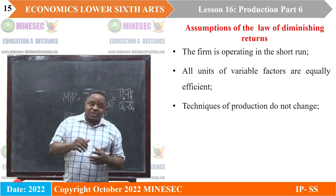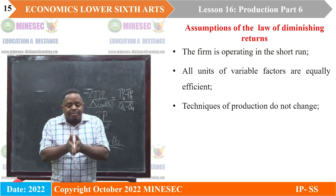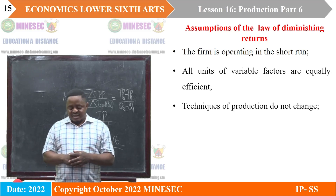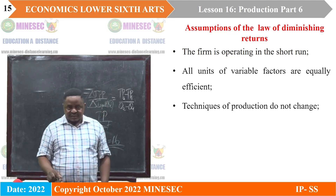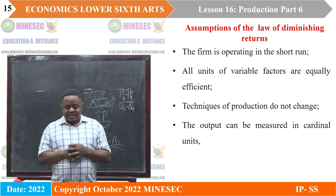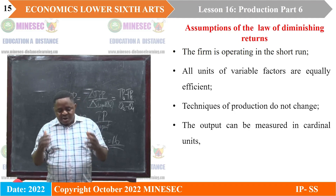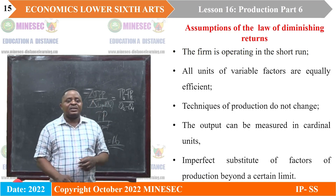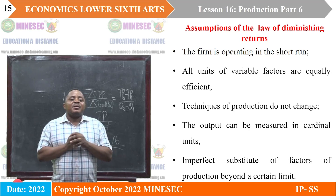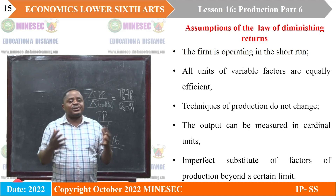We assume that the technique of production does not change — that is, the level of technology remains the same. We are using the same approach to produce, and if we change the approach of production, we can no longer see this law operating. It is assumed that output can be measured in cardinal values or units — it is a quantitative variable, where we can measure the units of output. It is also assumed that there are imperfect substitutes of factors of production beyond a certain limit, meaning beyond that limit there cannot be perfect substitutes any longer.